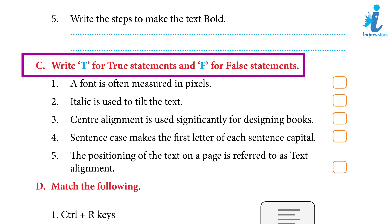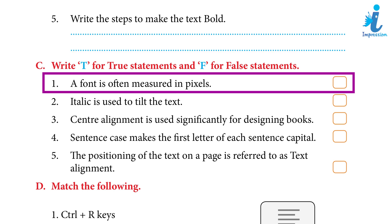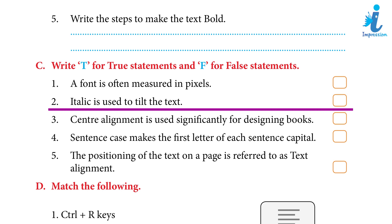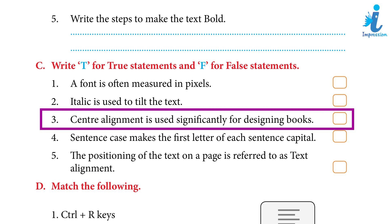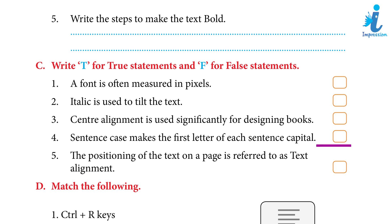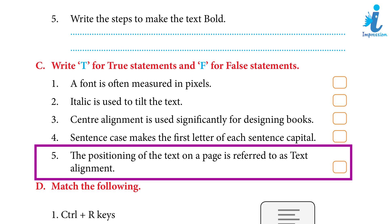True or False: 1. A font color is often measured in pixels — False. 2. Italic is used to tilt the text — True. 3. Center alignment is used significantly for designing books — False. 4. Sentence case makes the first letter of each sentence capital — True. 5. The positioning of text on a page is referred to as text alignment — True.